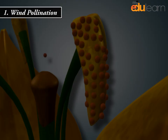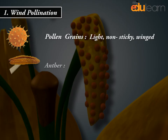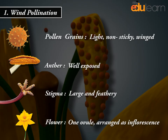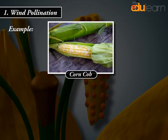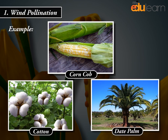Adaptations for wind pollination: Pollen grains are light, non-sticky, and winged. The anther is well-exposed. The stigma is large and feathery. Flowers have one ovule and are arranged as inflorescences. Examples: Corn cob, Cotton, Date palm.